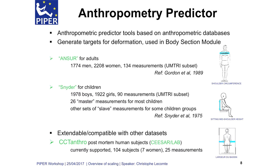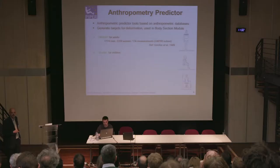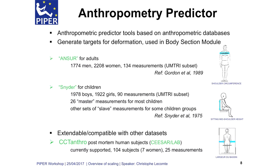We have two main types of databases. One is for adults, which is the ANSUR database. We have about 4,000 subjects in it, and there are more than 100 measurements for the anthropometric measurements within it. For children, we have a similar database, which is the Snyder database, which has about the same number of subjects and about 90 measurements.